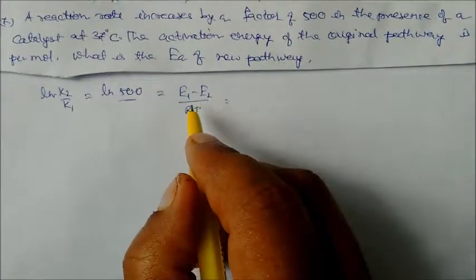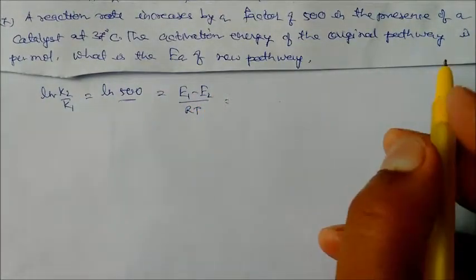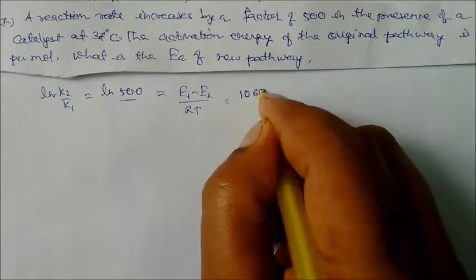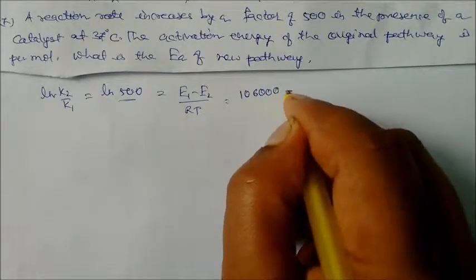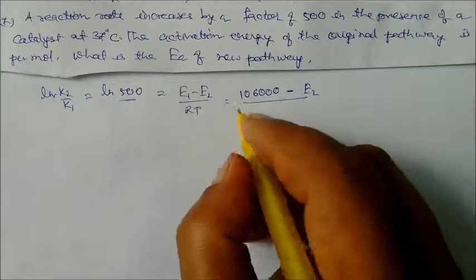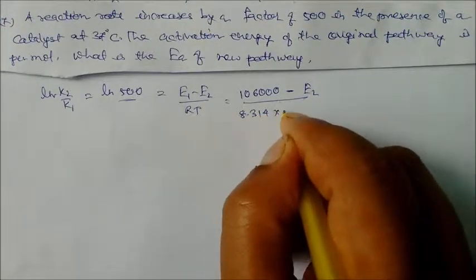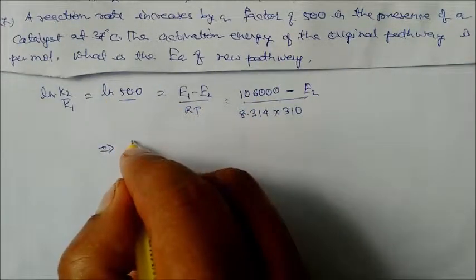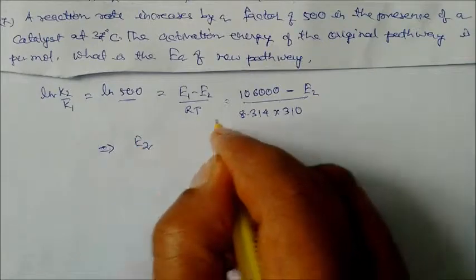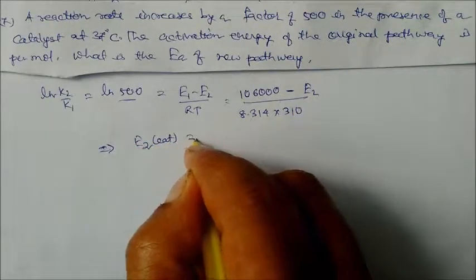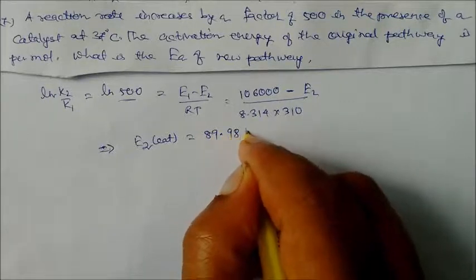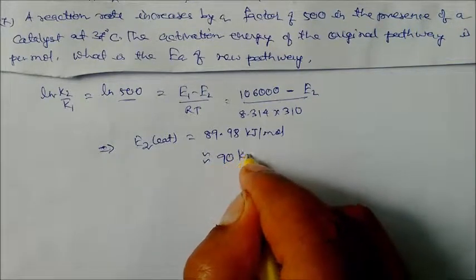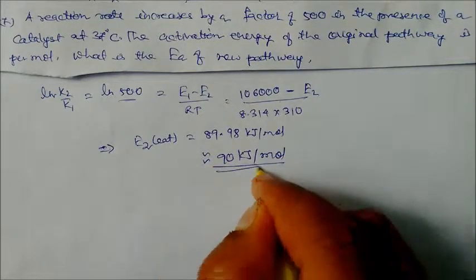So E1 minus E2 = 106,000 J/mol minus E2, with R = 8.314 and T = 310 K. Solving for E2, the activation energy of the catalyzed new pathway is 89.98 kJ/mol, approximately equal to 90 kJ/mol. That is our answer.